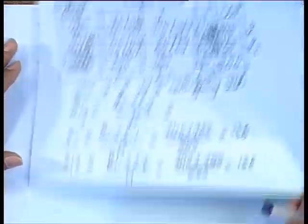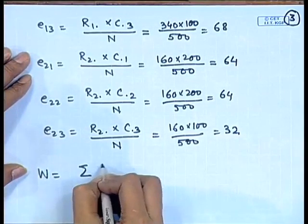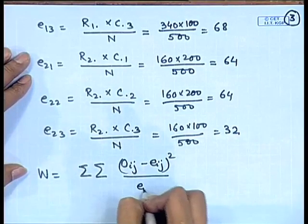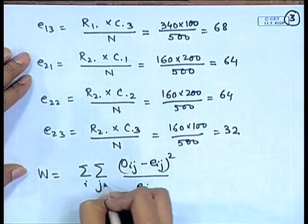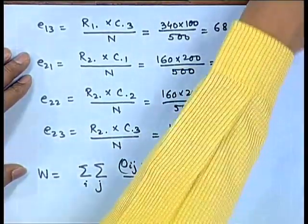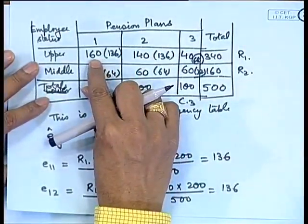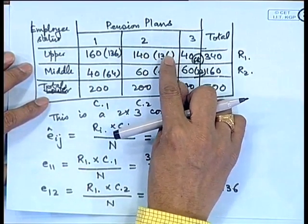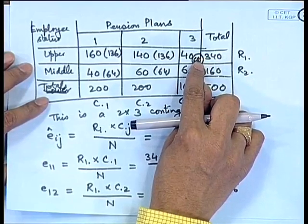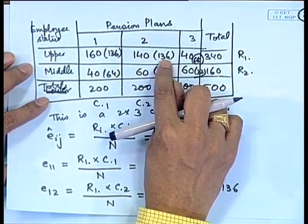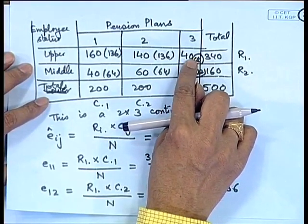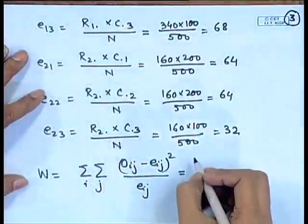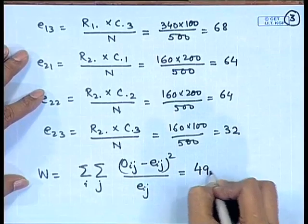Our formula for the test statistic W is the double summation of (O_ij − E_ij)² / E_ij. The differences can be calculated. For example, the first term is (160 − 136)² / 136 = 24² / 136. The next term is 4² / 136, then 28² / 68, and so on. The overall W turns out to be 49.63.